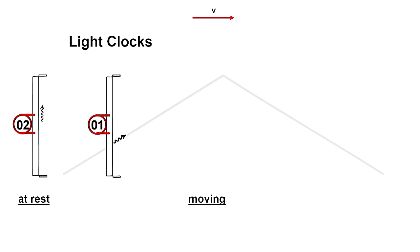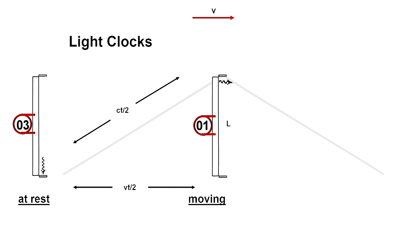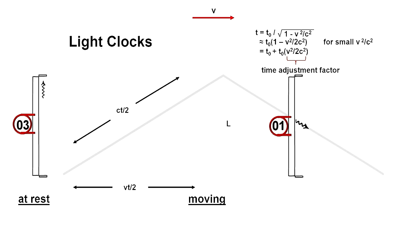The moving light clock is therefore running slower than a stationary duplicate. This is called time dilation. It's the geometry of the situation that gives us the conversion factor.